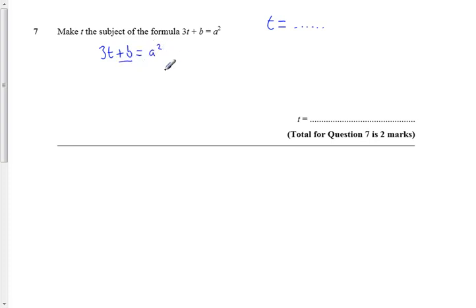Well, the first bit that's annoying is the plus b. So I'm going to subtract b from both sides of my equation. a squared minus b.